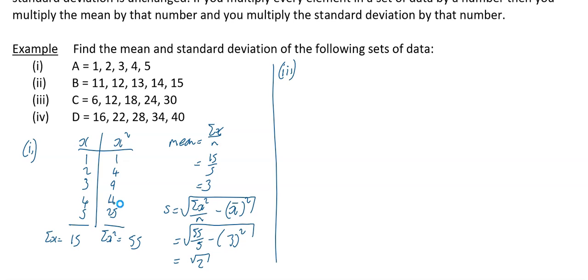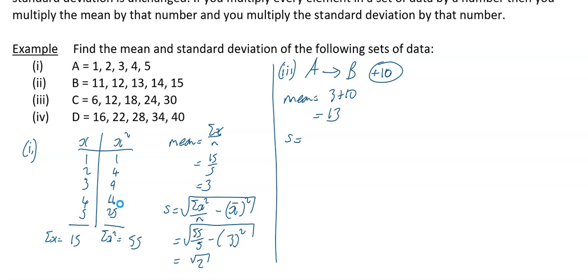Now for part 2, we think about how to get from set A to set B — and what you do is add 10. So my new mean for B is just my old mean of 3 plus 10, which is 13. For the standard deviation, adding 10 to everything just shifts them all up — they're all the same distance apart as before, so the standard deviation is unchanged. It is still root 2.